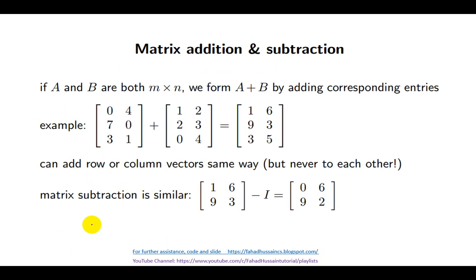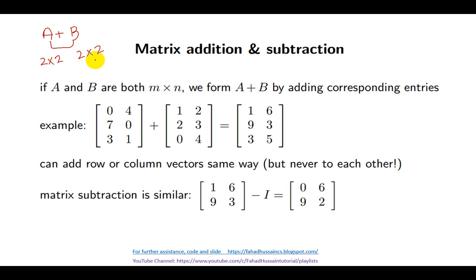The next topic is addition and subtraction. First we will understand the rules. For addition or subtraction of matrices, the matrices being added must have the same number of rows and columns. For example, if matrix A is 2 by 2 and matrix B is 2 by 2, addition is possible. Similarly, if A is 3 by 2 and B is also 3 by 2, addition is possible. This is the rule for matrix addition and subtraction — we add element-wise.